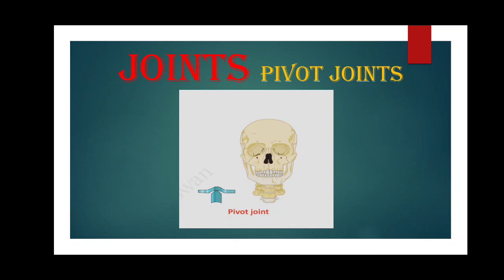We will discuss the various types of joints. The first type is pivot joint. As you can see in the figure, in this type of joint, one of the bones rotates within a ring-like structure formed by the other bone. This allows movement around an axis. This type of joint is found between the first and second vertebrae, and it helps you to move your head up and down and side to side.